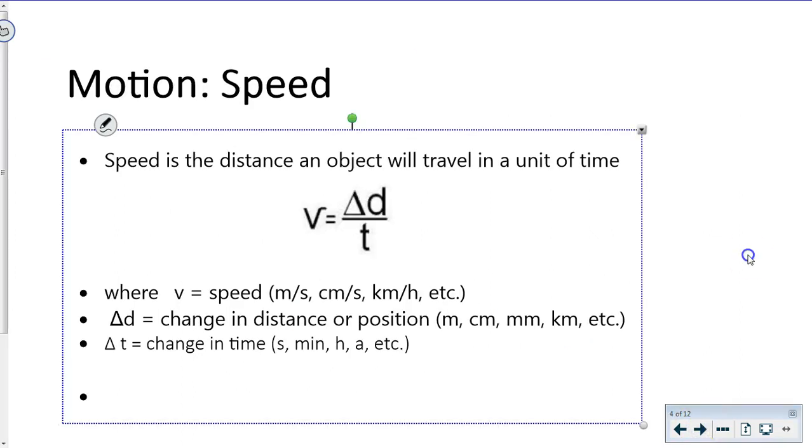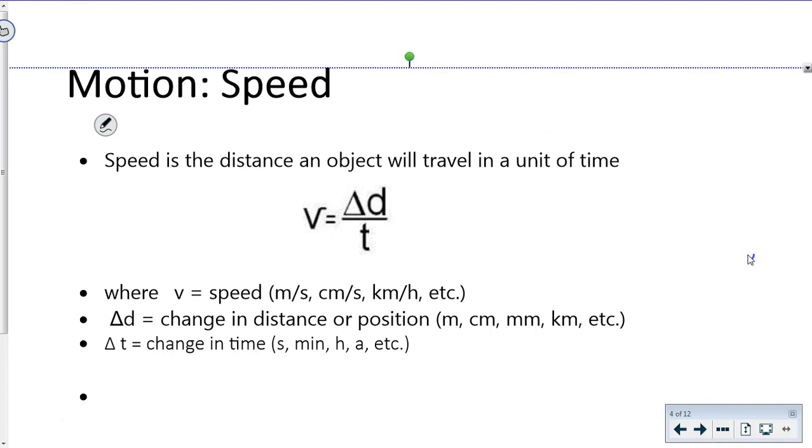Now the real stuff: motion and speed. Speed's definition is how far did you go and how long did it take. We need a distance and a time. The formula is shown with this symbol delta, which just means change.